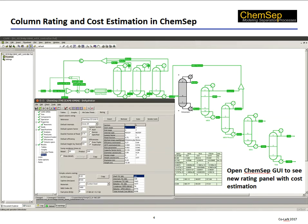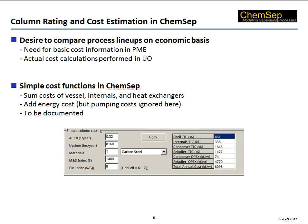The main reason for wanting to include cost calculations within ChemSat is our desire to compare different process configurations on the only basis that really matters: economics. There is, therefore, a need for the cost information to be available to the PME, but the actual cost calculation belongs to the unit operation itself. ChemSat employs a simple model based on total annualized cost. Input information includes the material and construction, the M&S index, and the energy cost. Output includes the costs of the column shell and any heat exchangers. Pumping costs are ignored, and the end result is the total annualized cost shown at the bottom right in this screenshot.